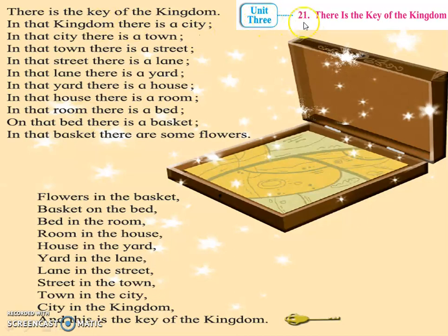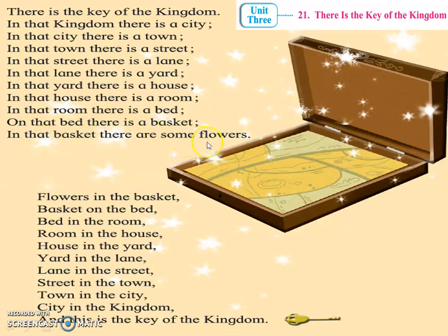Unit number 3, chapter number 21: 'There is the key of the kingdom.' There is a key of the kingdom. In that kingdom, there is a city. In that city, there is a town. In that town, there is a street. In that street, there is a lane. In that lane, there is a yard. In that yard, there is a house. In that house, there is a room. In that room, there is a bed. On that bed, there is a basket. In that basket, there are some flowers.